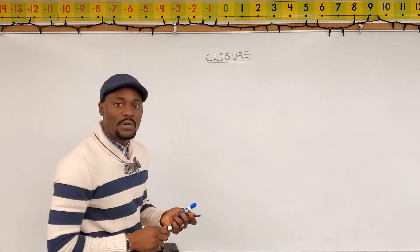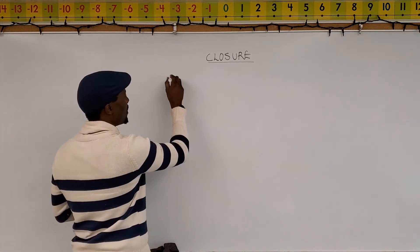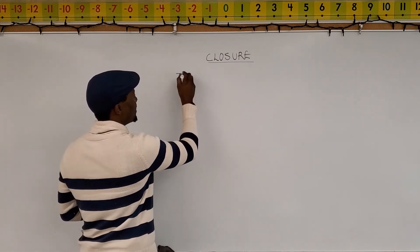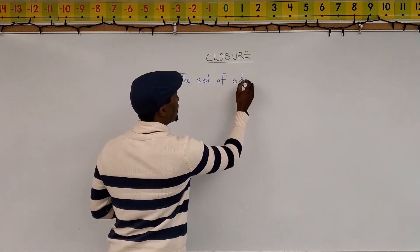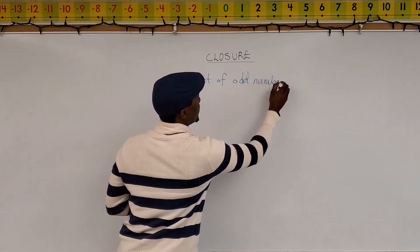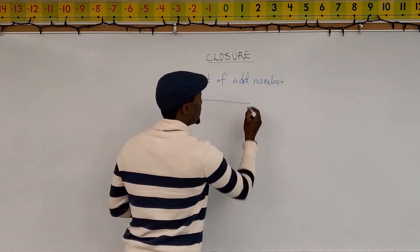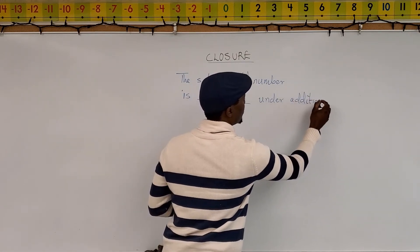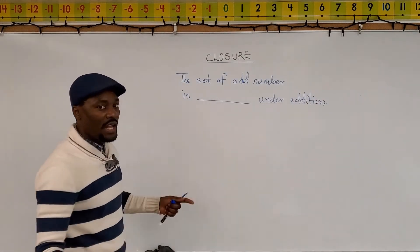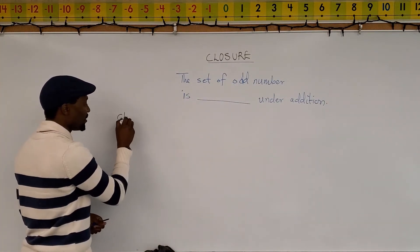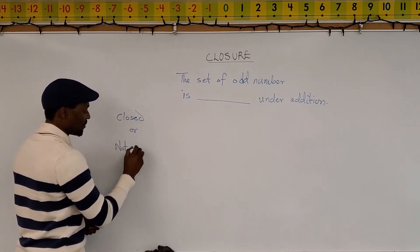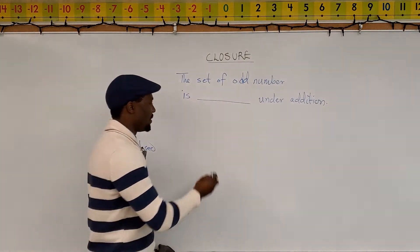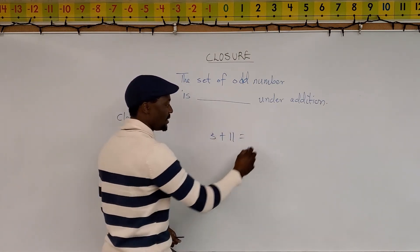So what I want to do is add odd numbers together. I want to see if this statement is true. Let's use a better marker. We say the set of odd numbers is, we don't want to say whether it's closed or not closed, but we want to do it under addition. So is it closed or not closed? We have two options to pick from. We're going to pick from closed or not closed. So we pick two odd numbers. Let's say three and 11. Three plus 11. Your answer is 14.